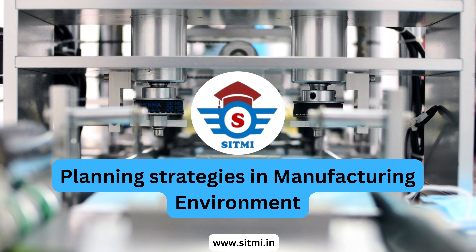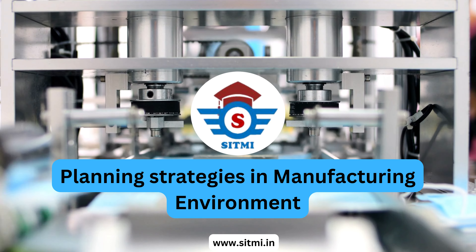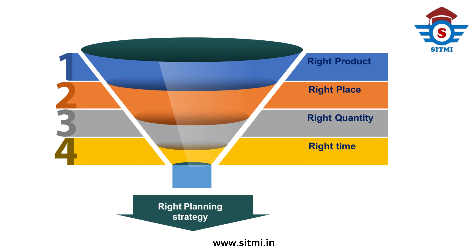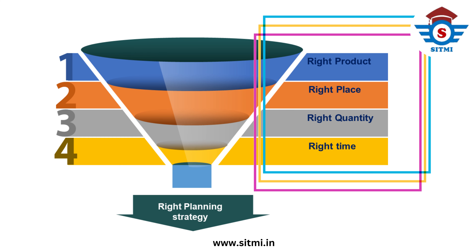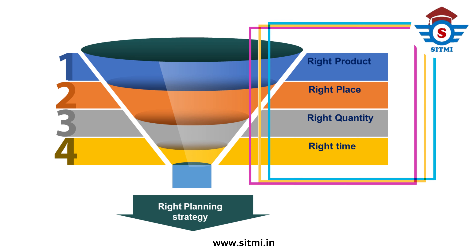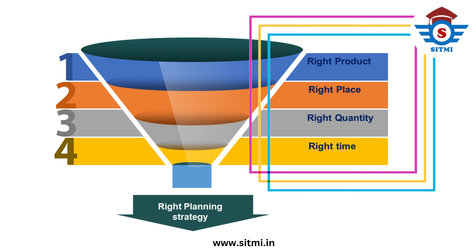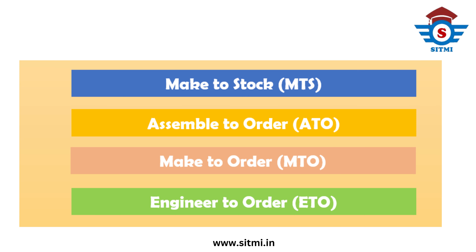Dear friends, now we will talk about one of the important topics from a manufacturing environment perspective. The topic is different planning strategies in manufacturing environment. Since we all know that right planning strategies help an organization to have the right product at the right place in the right quantity and at the right time. There are several planning strategies based on different product natures, but most commonly there are four strategies which are often used: Make to Stock (MTS), Assemble to Order (ATO), Make to Order (MTO), and Engineer to Order (ETO).